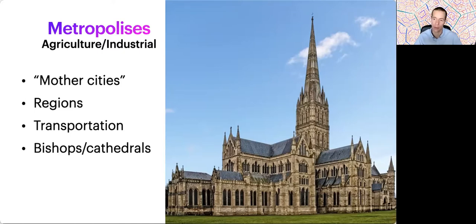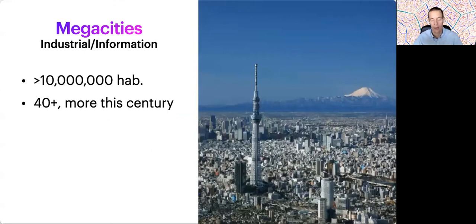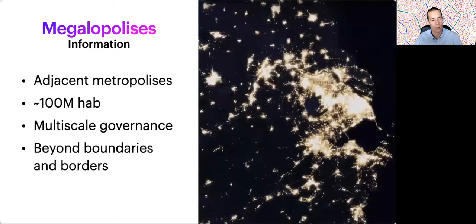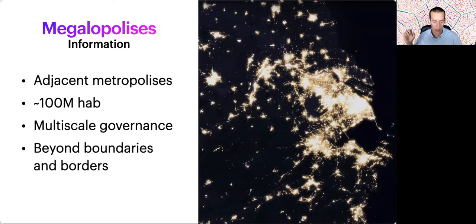This led to the growth of metropolises due to more efficient transportation. Megacities are defined by some as settlements with more than 10 million inhabitants. There are already more than 40 cities of this size. People are also starting to speak about megalopolises — basically adjacent metropolises — on the order of 100 million inhabitants. These megalopolises pose several new challenges, like multilevel governance: you have districts, cities, regions, nations, and commonwealths like the European Union, where settlements span across physical and political borders.